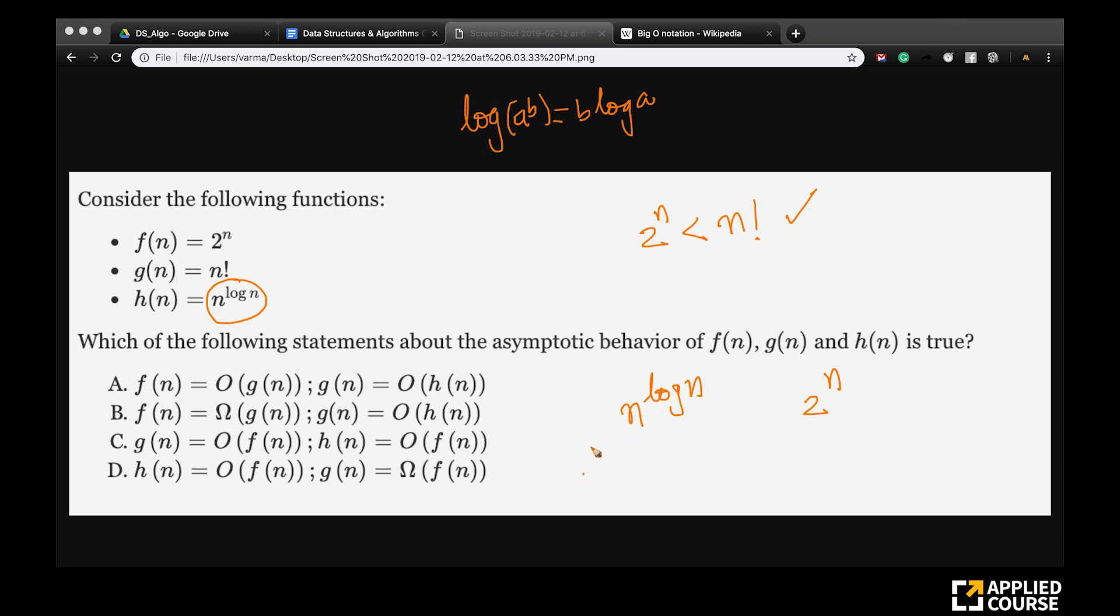Very simple logic: log of a^b is b*log(a). If I take log here, what happens? This exponent comes out, and I have log(n) here. So I get log(n) times log(n). That is what I get on this side. What about here? If I take log here, what do I get? I get n, because log of 2^n with base 2 is nothing but n. Let us assume log base 2 just for simplifying my math.